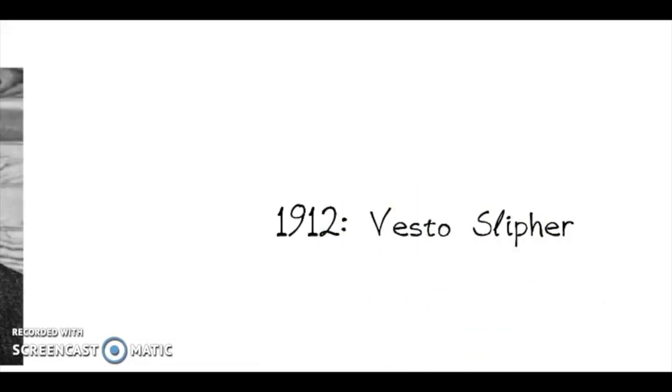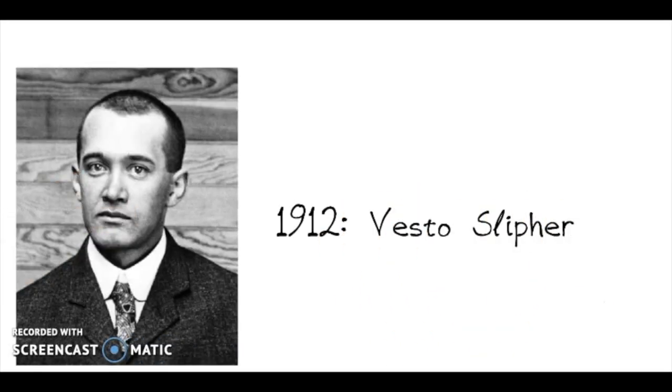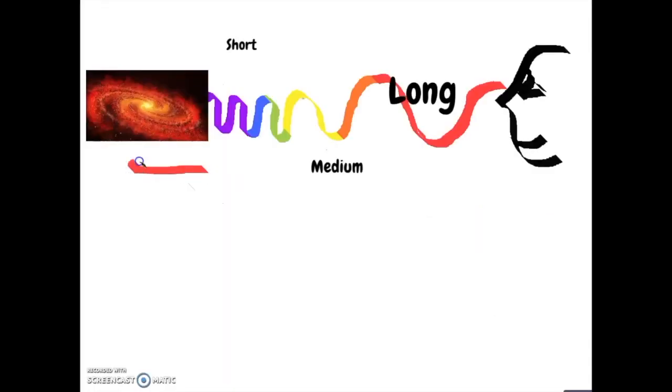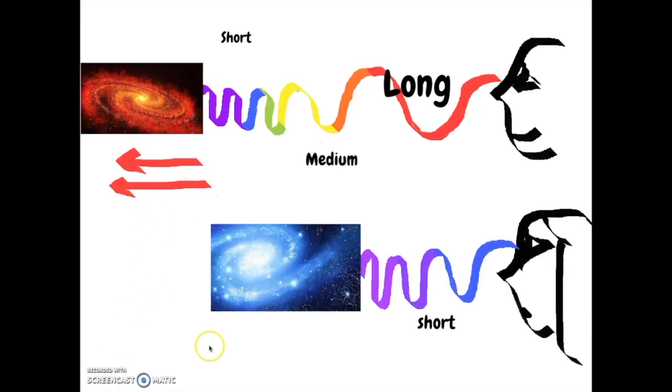In 1912, Vesto Schleifer observed almost all galaxies were moving away from us because their light was redshifted. Redshift happens when something moves away, the waves becoming stretched and turning red.